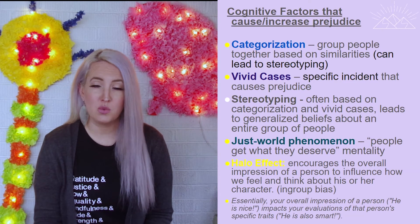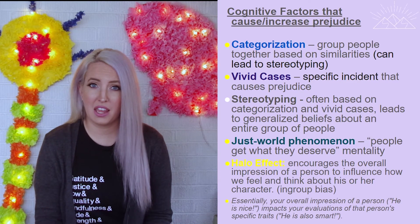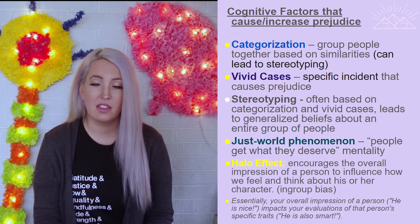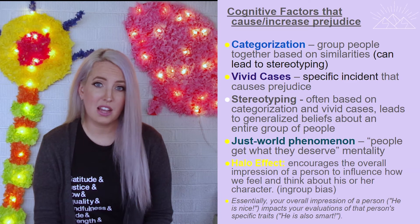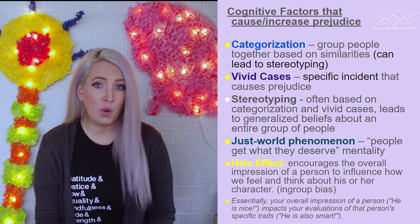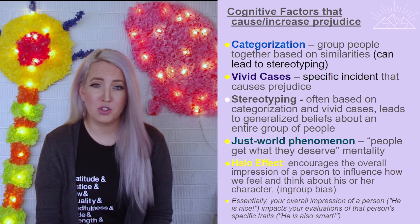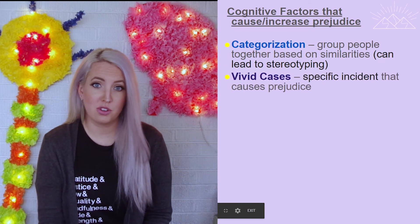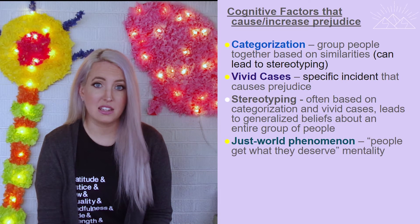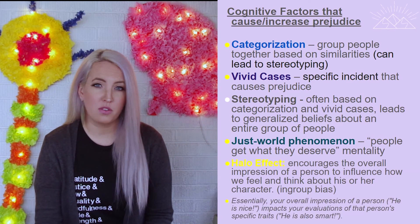We might also experience vivid cases — where one really unique experience leads to a generalization about all members of a group. Think about having a bad experience at a doctor's office leading you to not like any doctors. Stereotyping is another cognitive factor, where we take those vivid cases and generalize to the entire group, creating generalized beliefs about all members. The just world phenomenon builds off social inequalities with the cognitive belief that people get what they deserve, which helps rationalize and reinforce prejudiced beliefs.